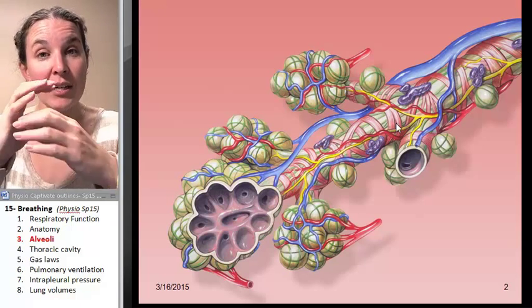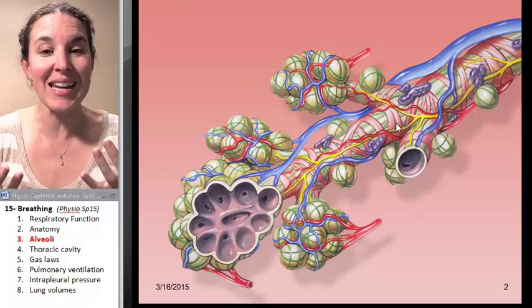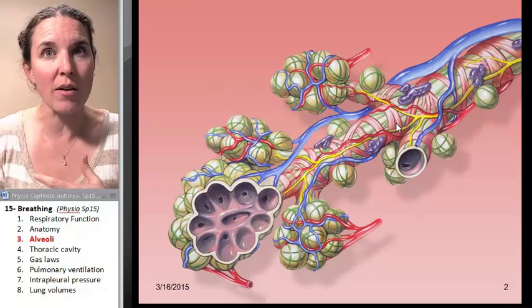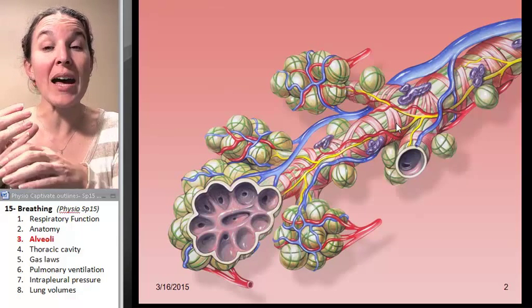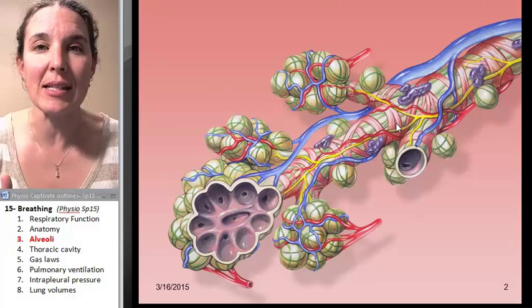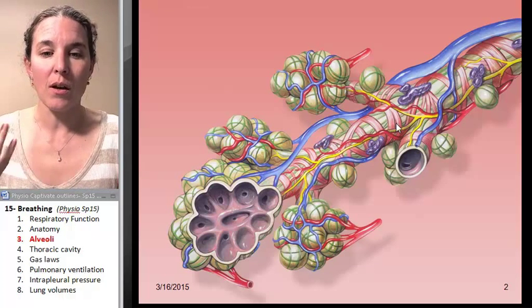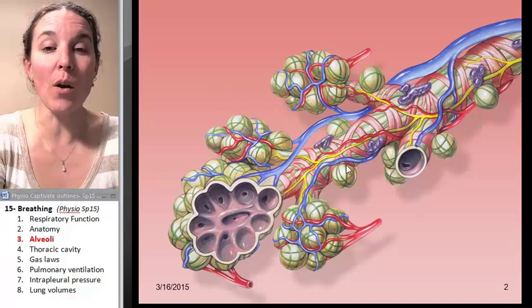Bronchoconstriction and bronchodilation can regulate the amount of air that can get into the alveoli or out of the alveoli in the first place. So that's the site where we can actually regulate carbon dioxide and oxygen concentrations in your blood.